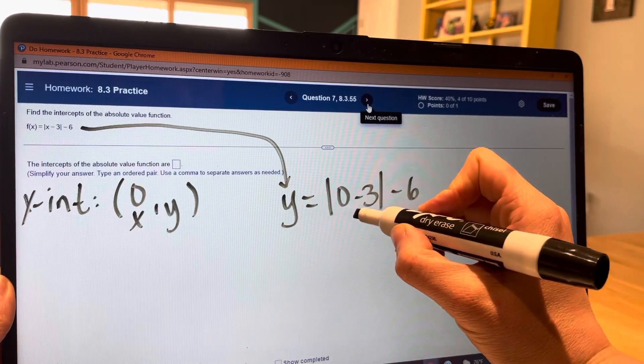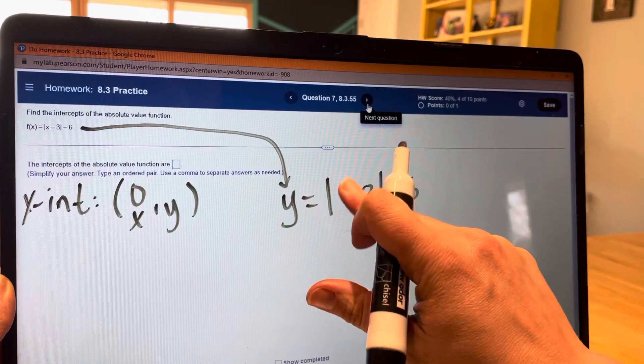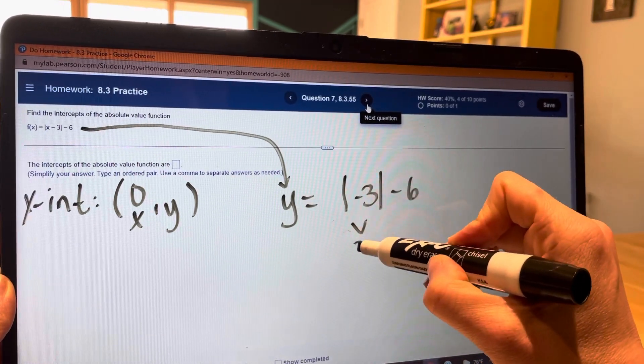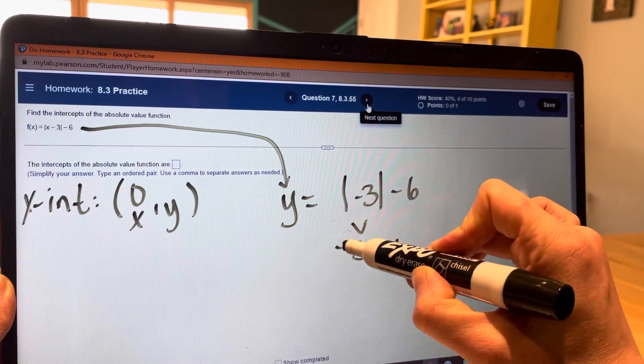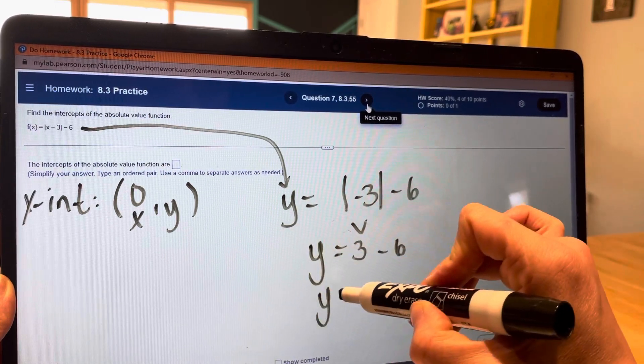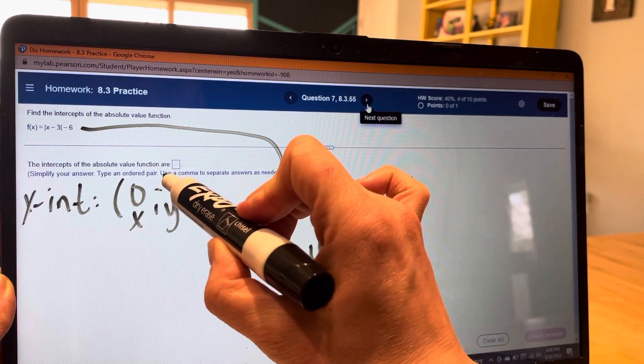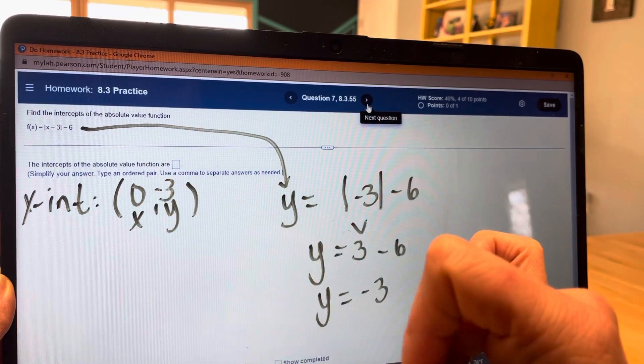0 minus 3 is just negative 3. So I have absolute value of negative 3, which is positive 3, minus 6. y equals negative 3. So when I input 0, my output was negative 3.